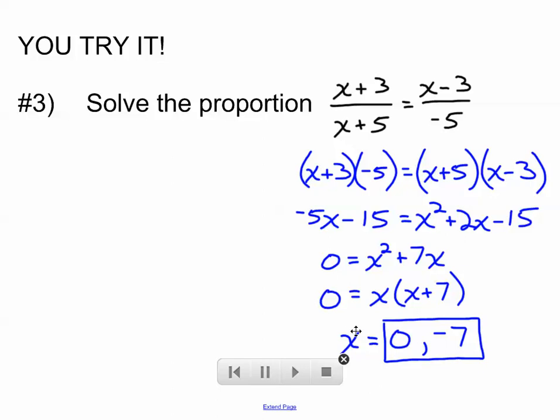Now last time we did one like this, 0 was an extraneous solution, but it's not this time. 0 plus 5 is 5, and you're allowed to divide by 5. That's not an issue. Negative 7 plus 5 is negative 2, and you're allowed to divide by negative 2, so that's not an extraneous solution. If negative 5 came about as one of our solutions, that would be extraneous, and we would ignore it, but it didn't.